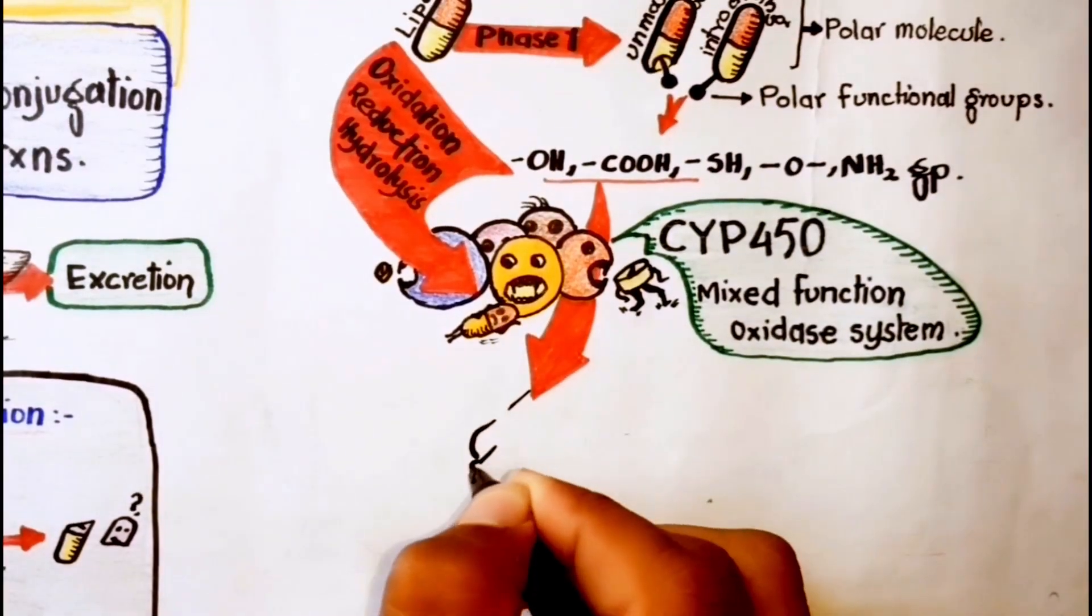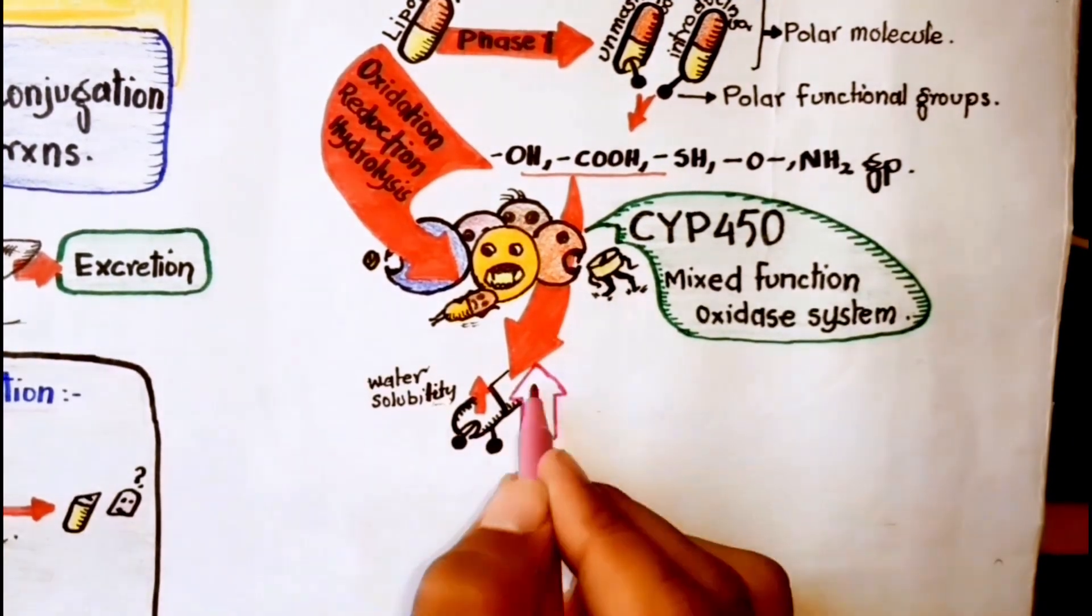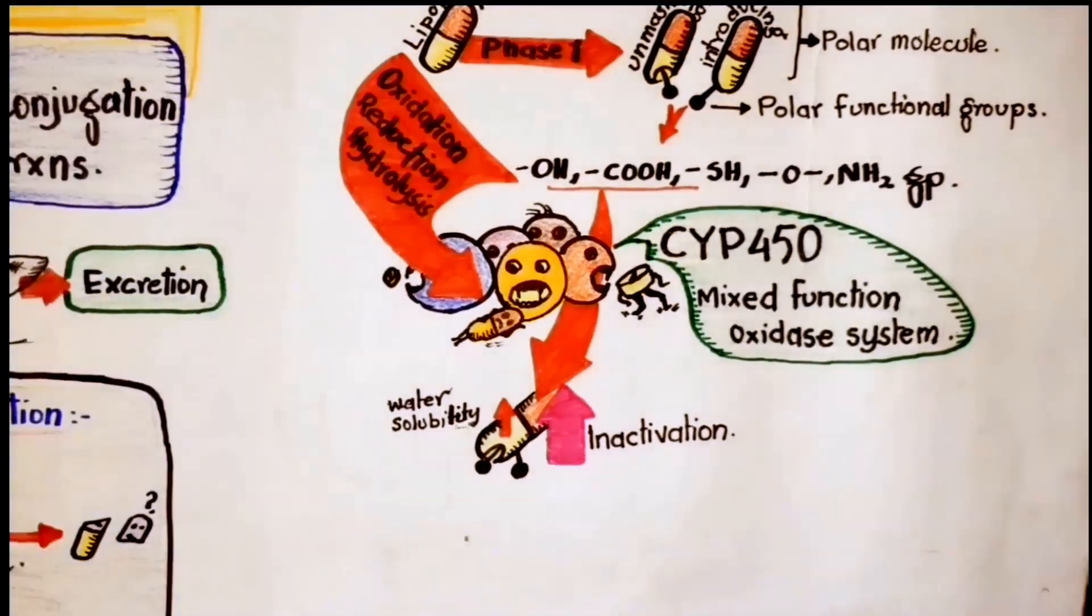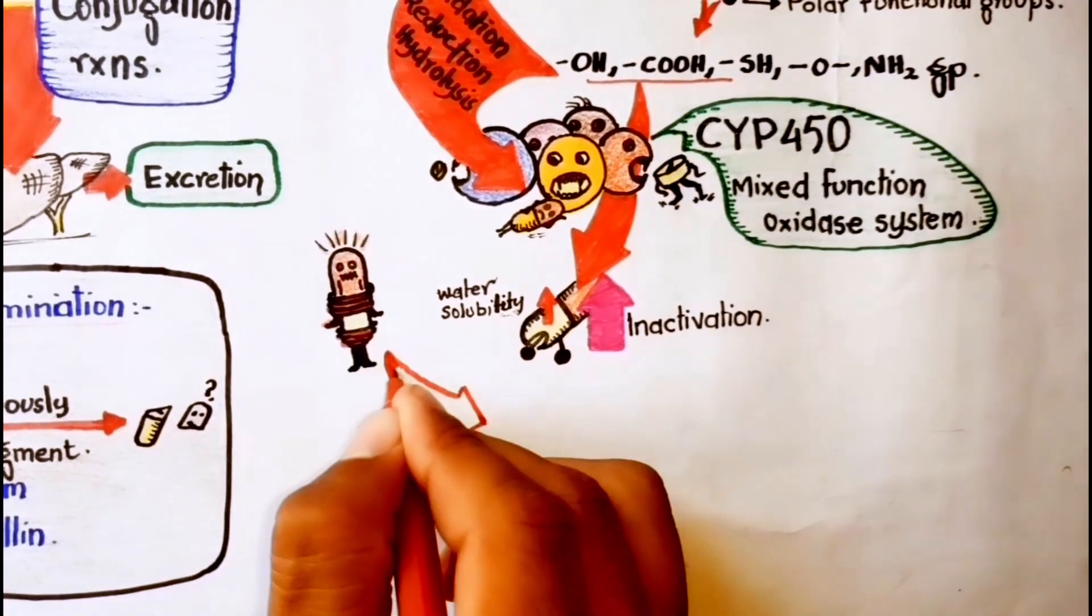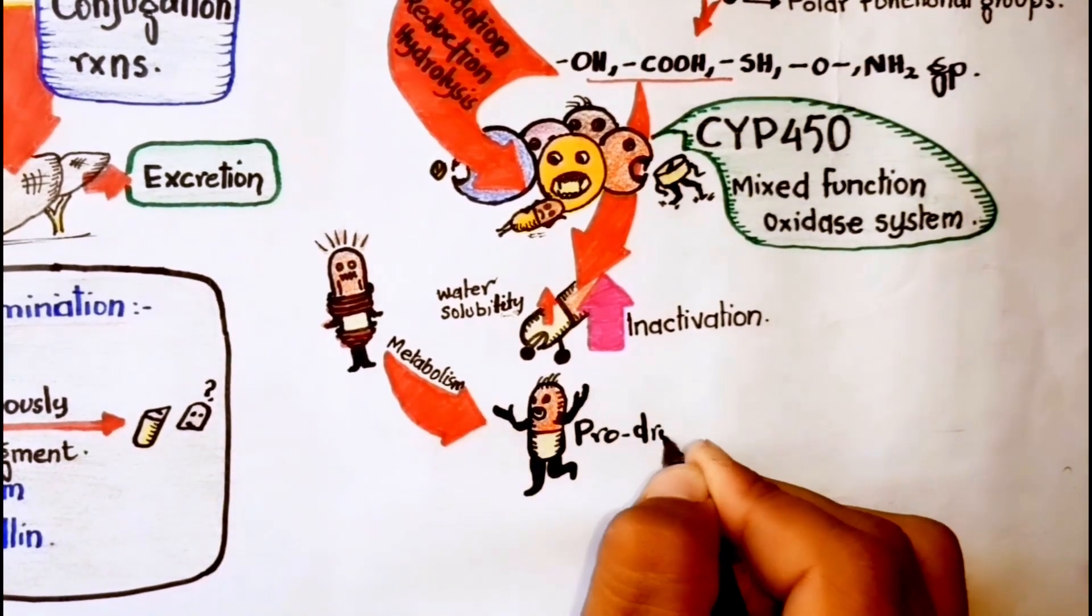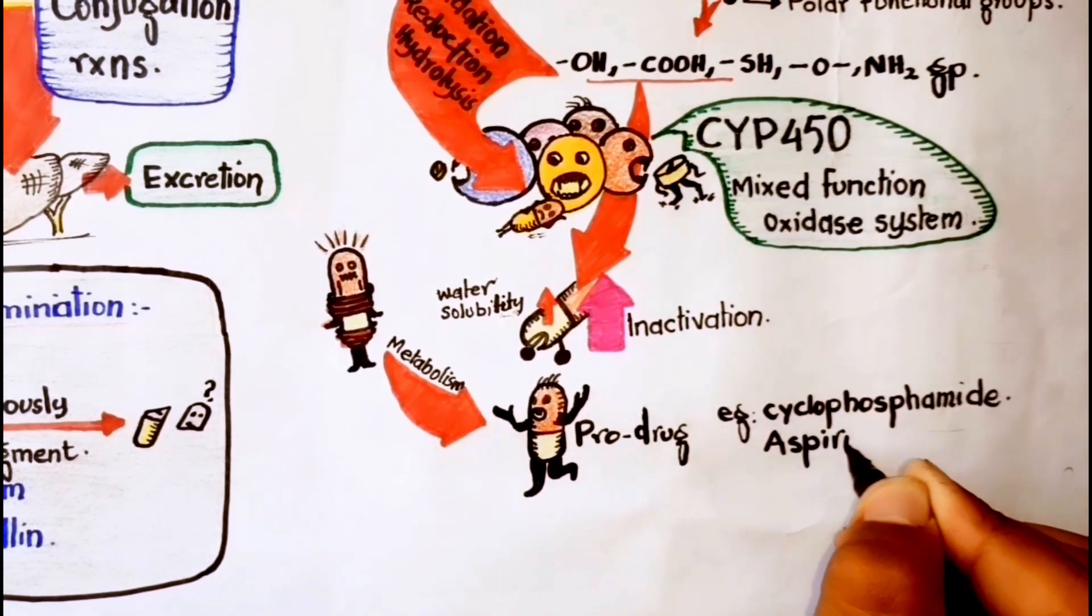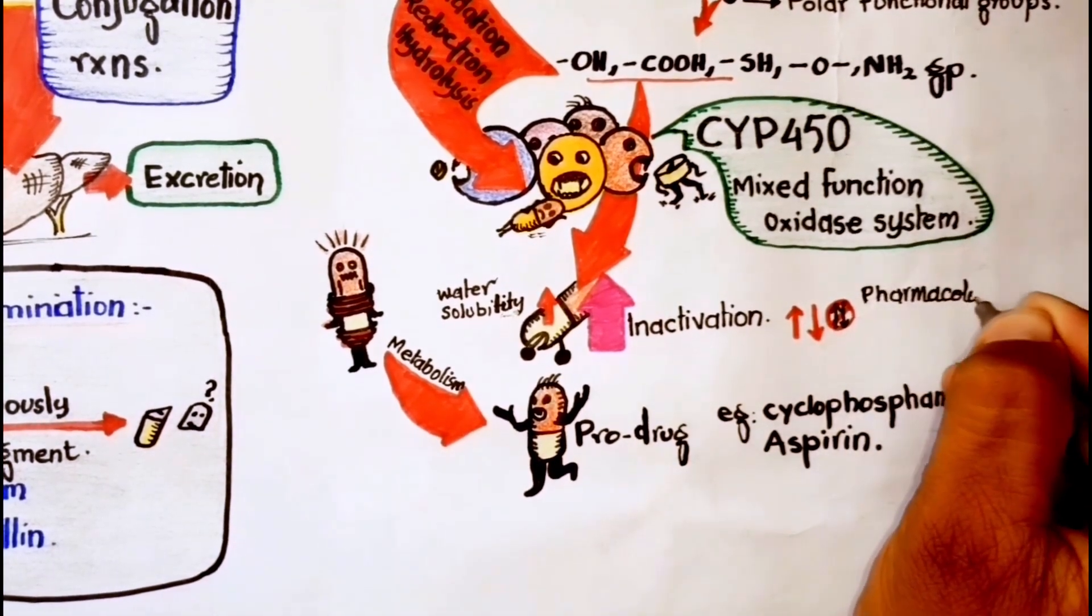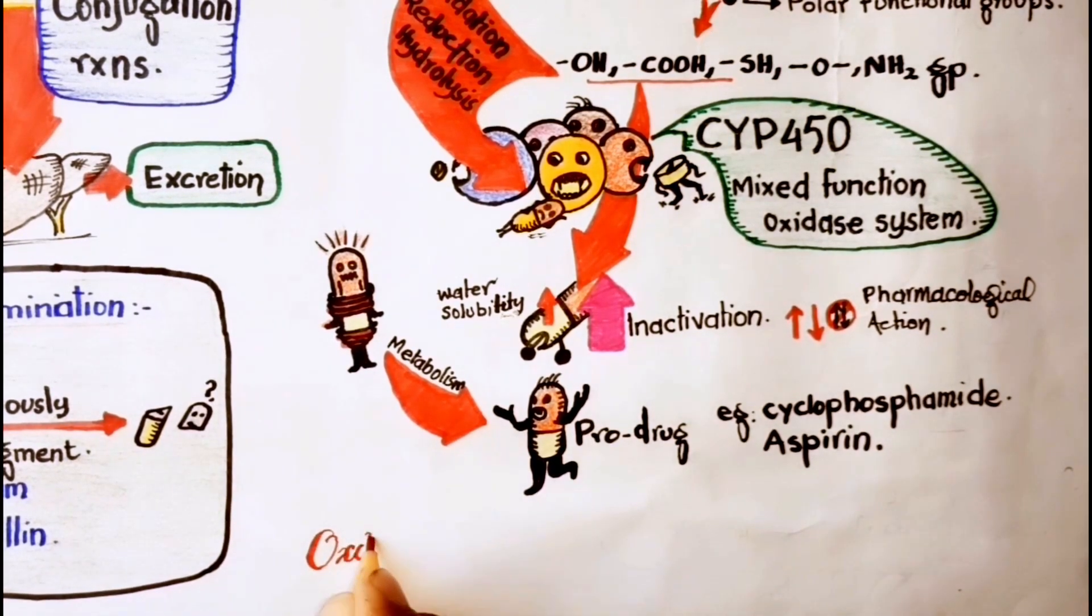The addition of functional groups does little to increase water solubility but usually leads to inactivation of an active drug. In certain cases, metabolism leads to bioactivation. Inactive drugs that undergo metabolism to active drug are called prodrugs, for example, cyclophosphamide and aspirin. Phase 1 metabolism may increase, decrease, or have no effect on pharmacological action.